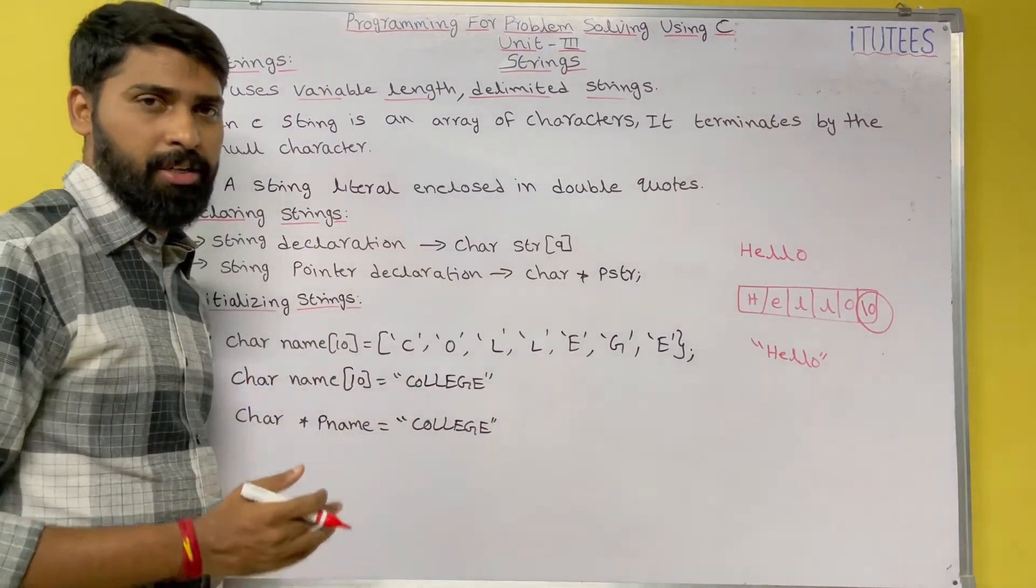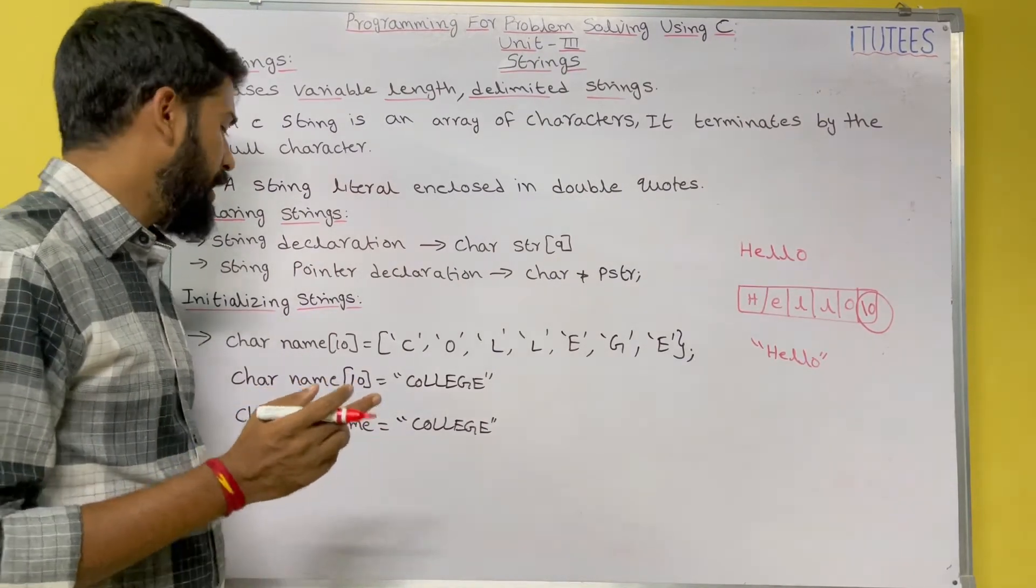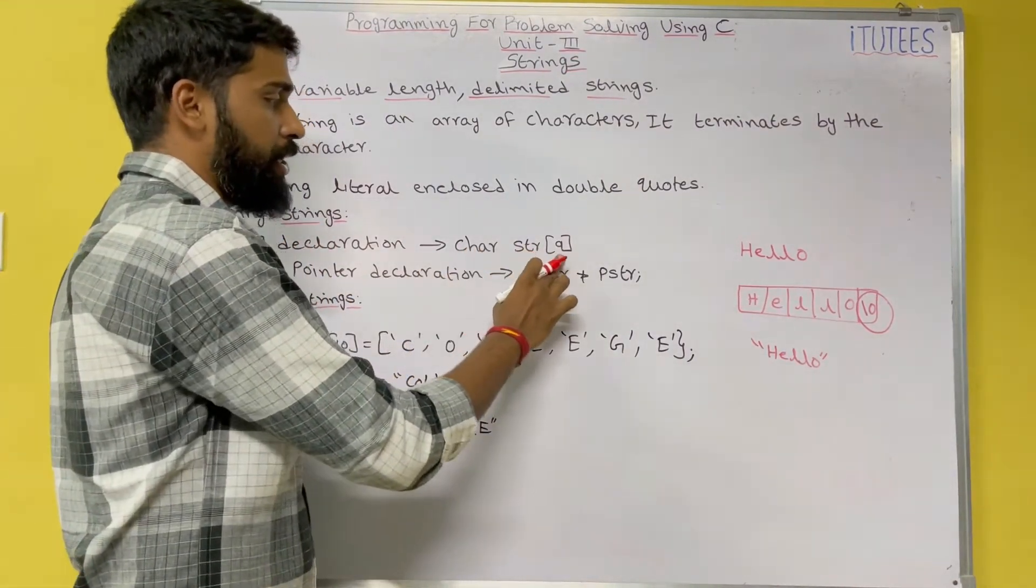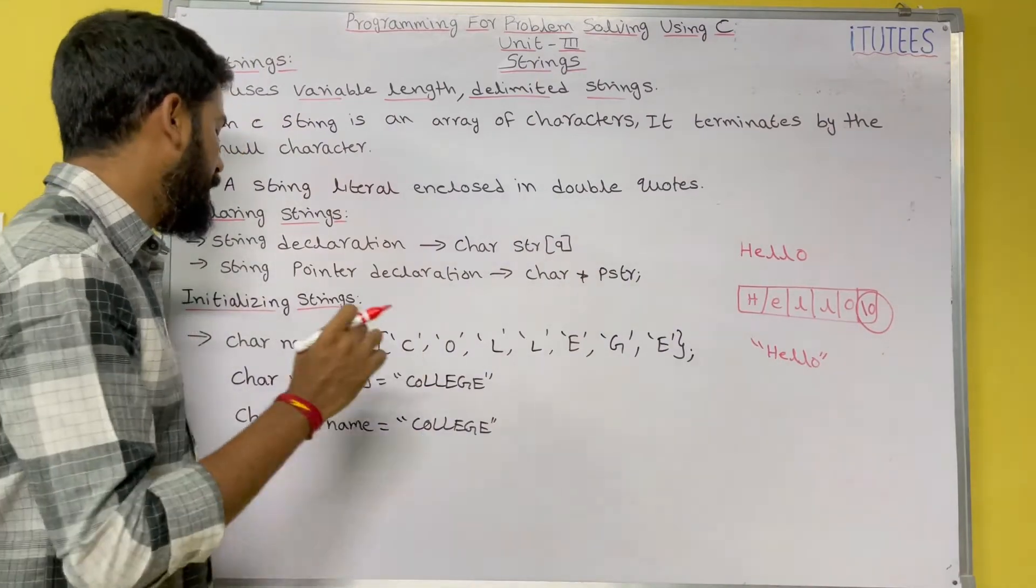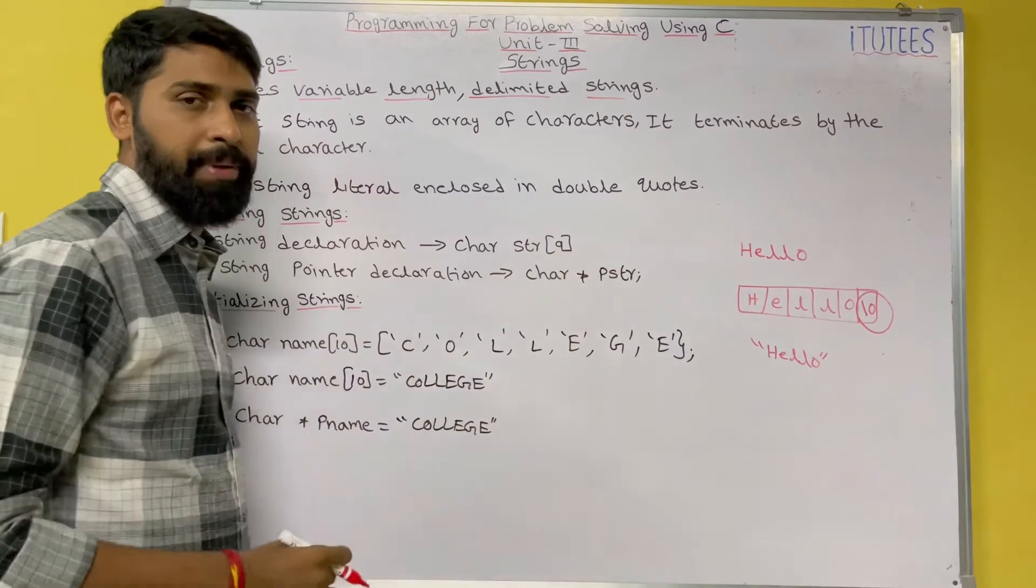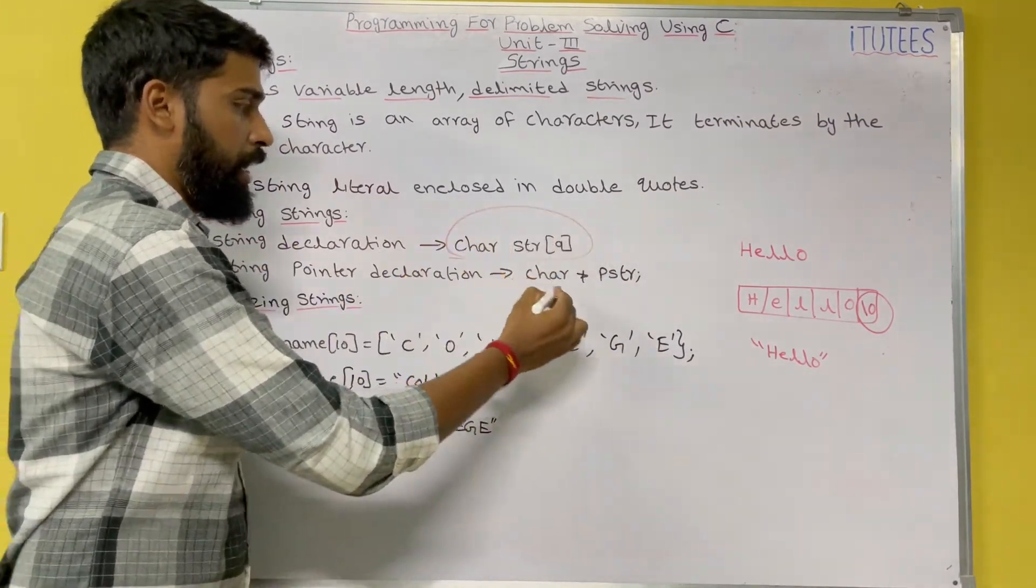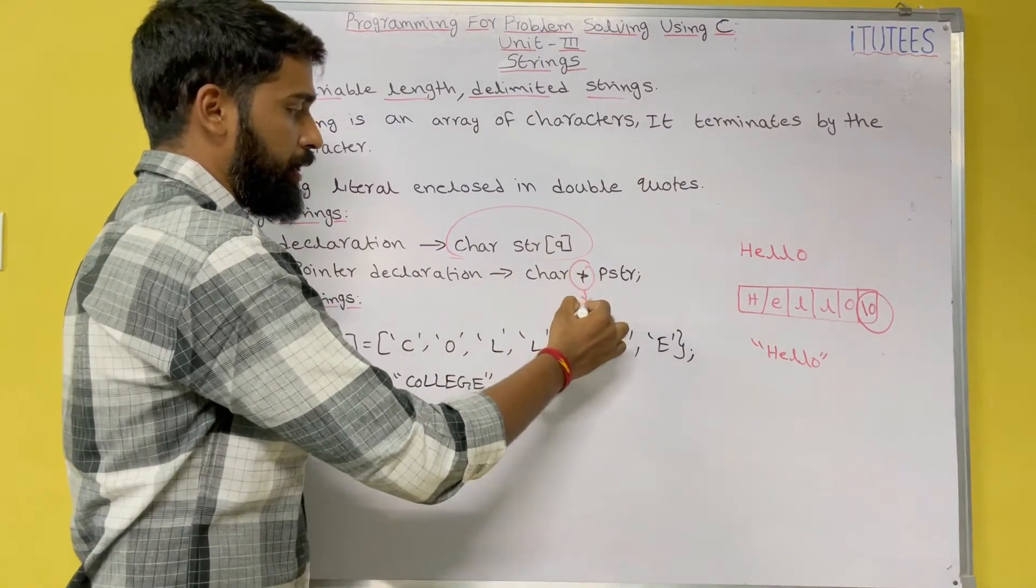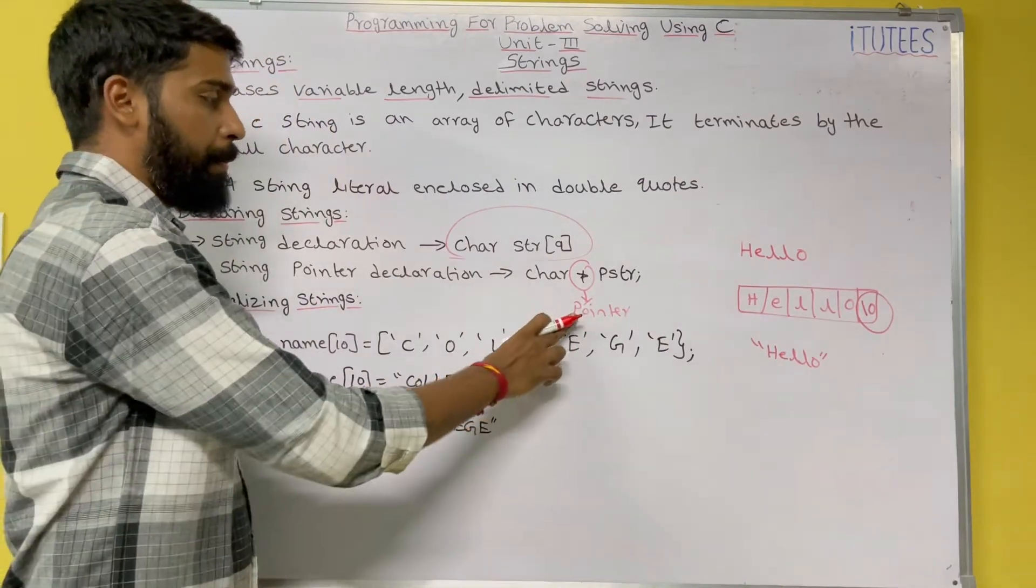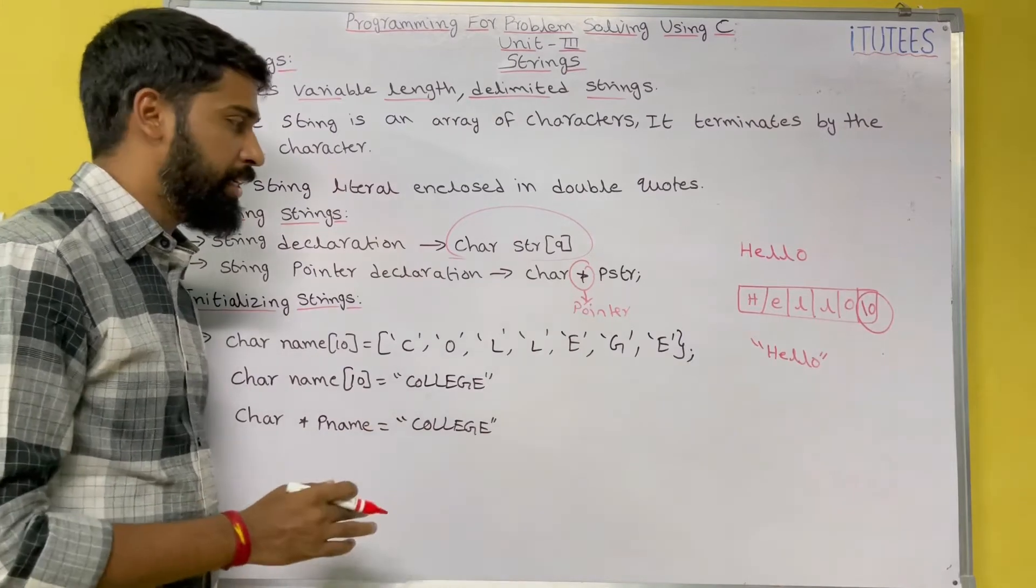So declaring the string, how we are going to declare the string, we can declare the string in two ways in C. One is string declaration. So this is char str of nine. Another one is string pointer declaration, char asterisk pstr. So this is the string declaration and this is pointer declaration. Here you are going to declare a string by using a pointer. So we discuss about the pointers in pointers chapters in detail.